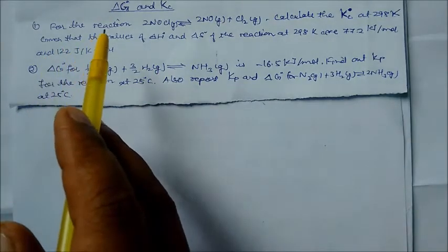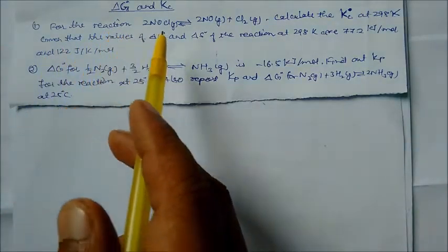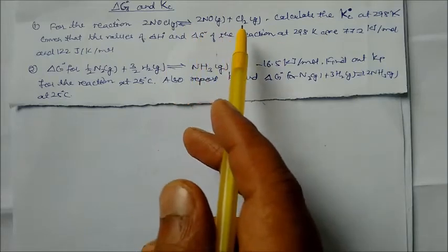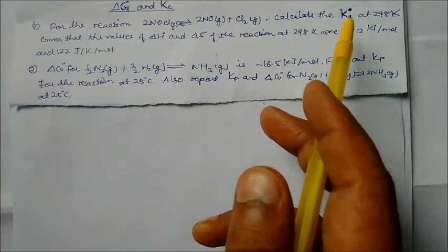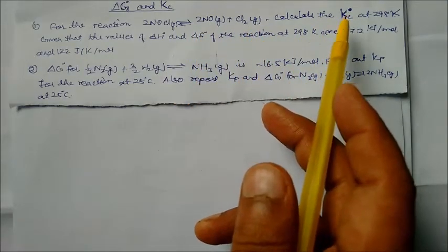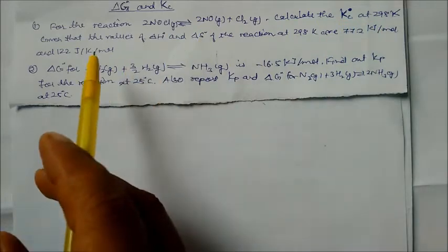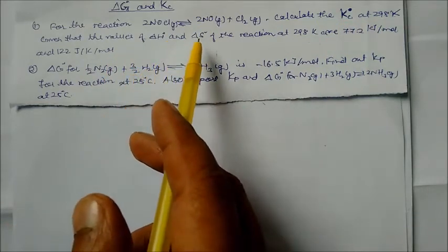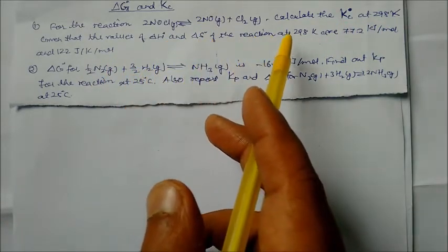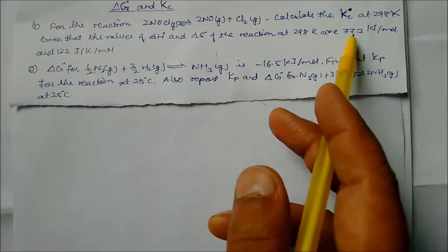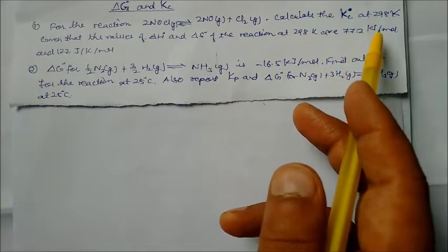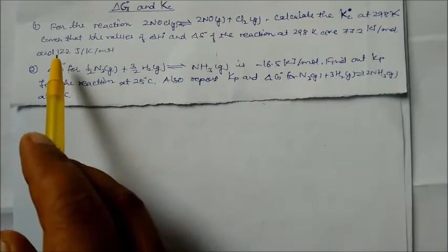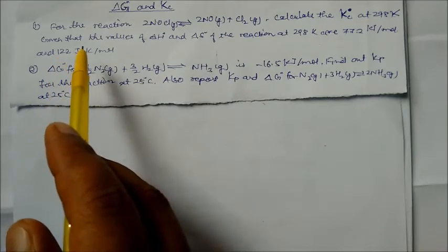The first question: for the reaction 2 NOCl(g) ⇌ 2 NO(g) + Cl₂(g), calculate the standard equilibrium constant at 298 K, given that ΔH° = 77.2 kJ/mol and ΔG° = 122 kJ/mol.